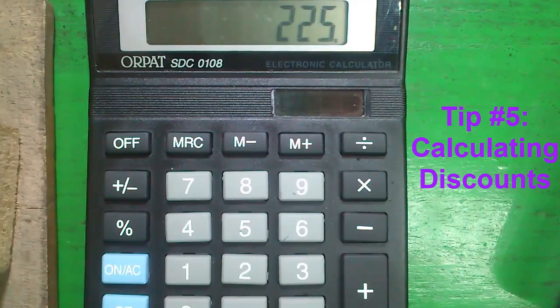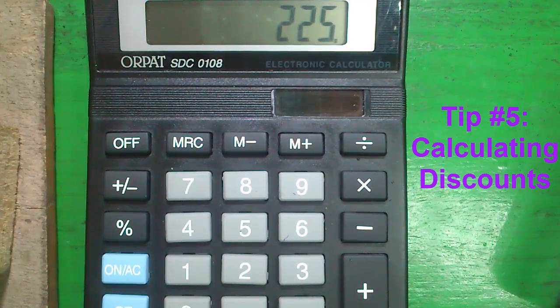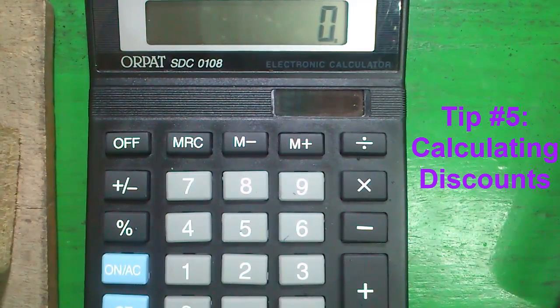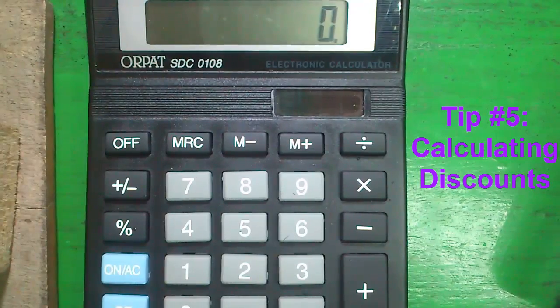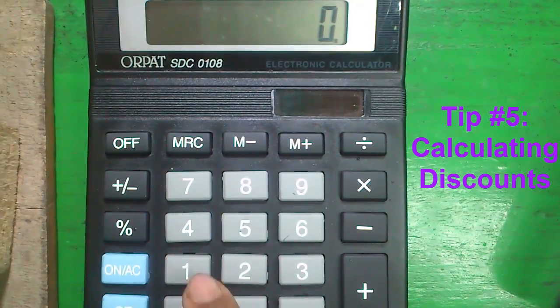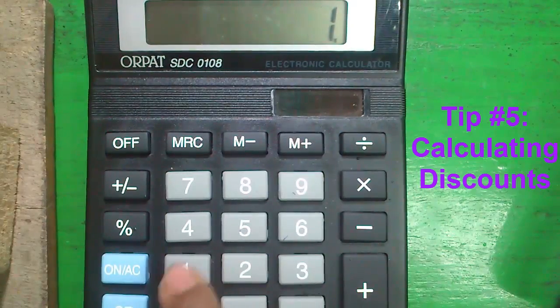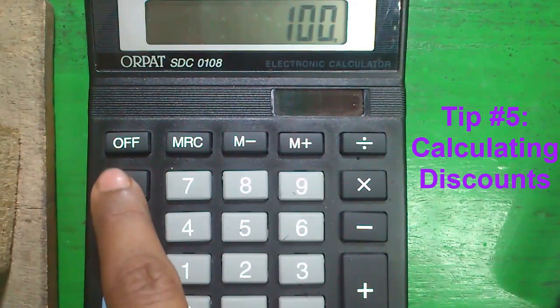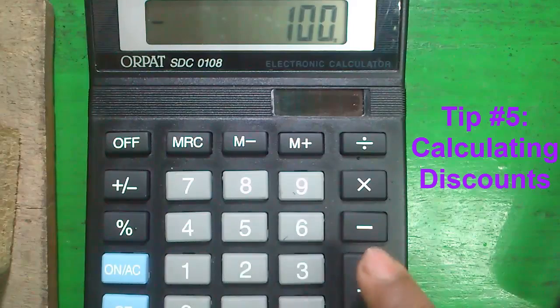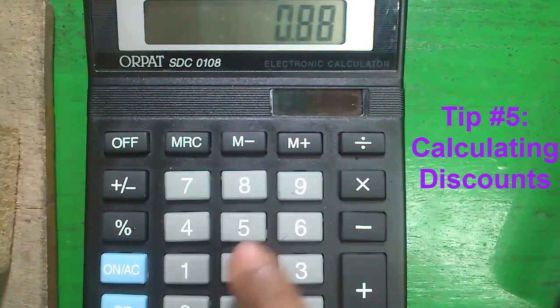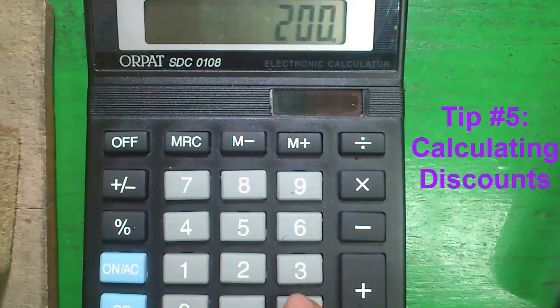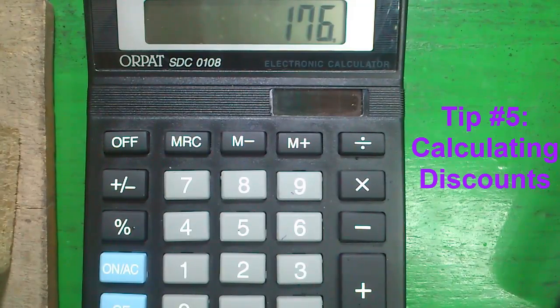Tip number 5 and our final tip, calculating discount. Say I want to discount 12% from 200. So I will enter 12 divided by 100, press the plus minus button, plus 1 multiply 200 and press equals. It is 176.